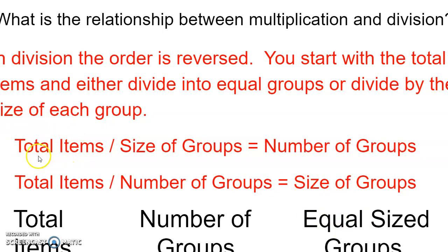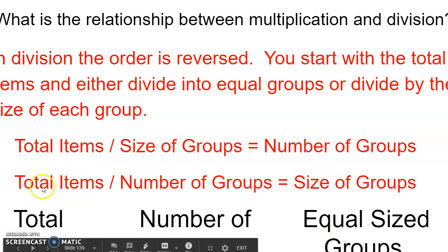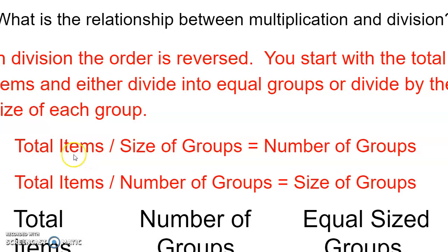It depends on what the problem gives you in how to use each one of these parts. In division, you always start with the total — so usually the largest number you're given is the total. In third grade, the highest number out of these three is going to be your total number of items. You could divide by the size of the groups to get the number of groups, or divide by the number of groups to get the size of the groups.